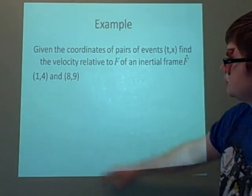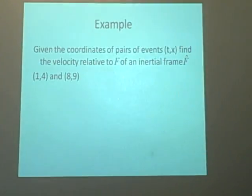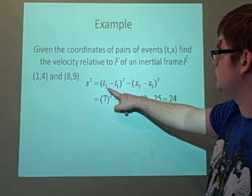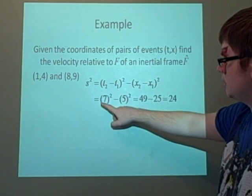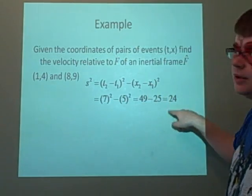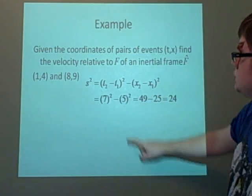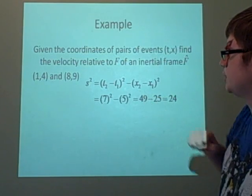First, we find the squared interval: s² = (t₂ - t₁)² - (x₂ - x₁)². For points (1,4) and (8,9), we get (7)² - (5)² = 49 - 25 = 24, which is positive, so it's time-like.